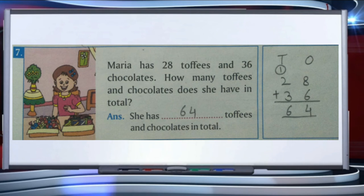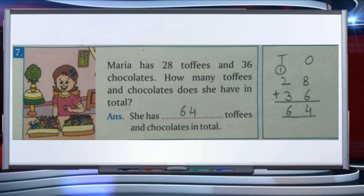Question number 7: Maria has 28 toffees and 36 chocolates. How many toffees and chocolates does she have in total? We have to find the total number of toffees and chocolates. We write tens and ones and add 28 plus 36. Starting from the ones place: 8 plus 6 is 14. We regroup 14 as 1 ten plus 4 ones.